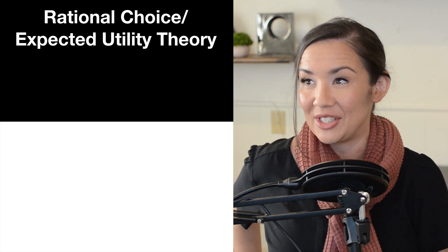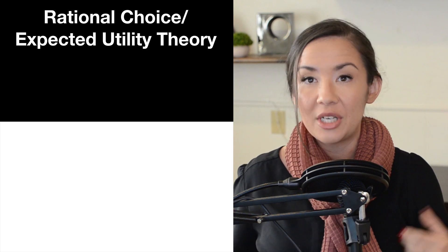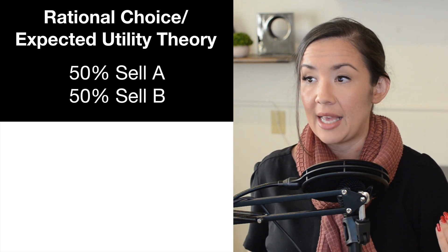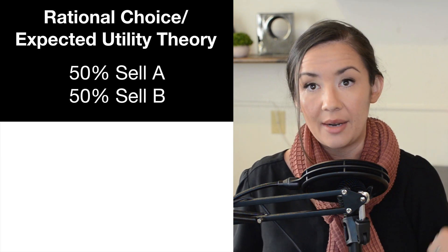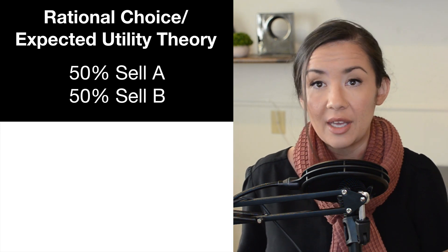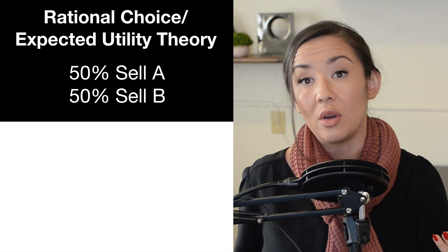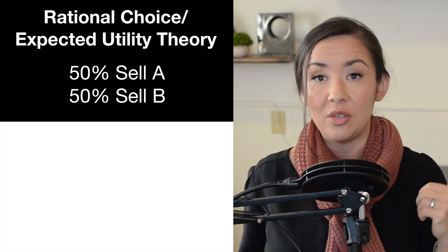Let's start with some predictions from rational choice and expected utility theory. The prediction would be that 50% of the time people would sell stock A and 50% people would sell stock B. They are equivalent in price right now - you get $15,000 no matter which one you sell. So it's really a coin flip which one you should be selling in the terms of expected utility theory.